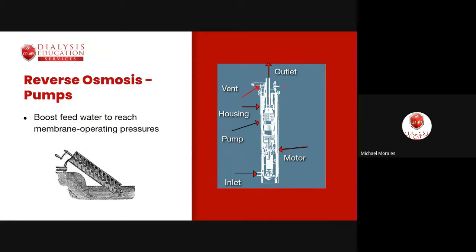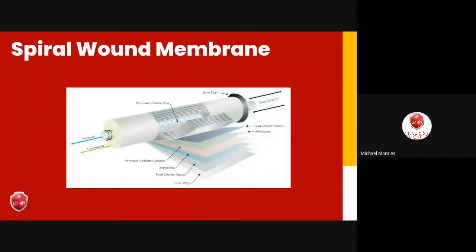The RO membrane requires booster pumps to build up high pressure. Water is forced across multiple layers of membrane — a jelly-roll configuration — from the outside of a tube-shaped filter to the inside, where a perforated tube carries product water (permeate) to the machines. If water doesn't make it through, it becomes concentrated. Temperature affects how much water makes it through to become product water.